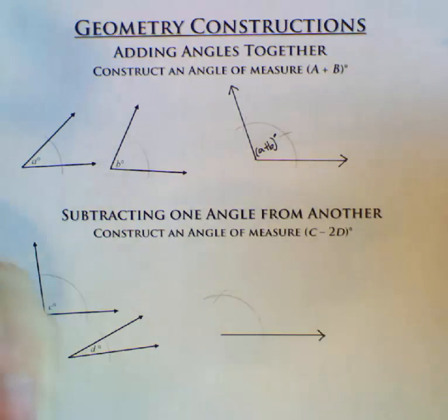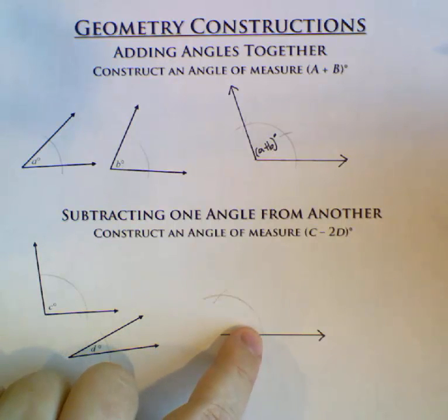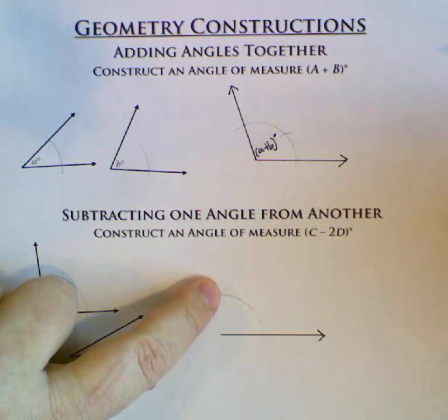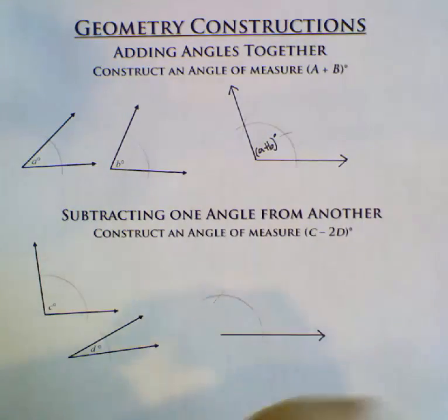So when we did subtracting of line segments, I said you could always go from the right or go from the left. And similarly, for subtracting angles, I can either go from this point here, or I can go from this over here. Generally speaking, it's easier to go from over here, so that's what I'm going to do.